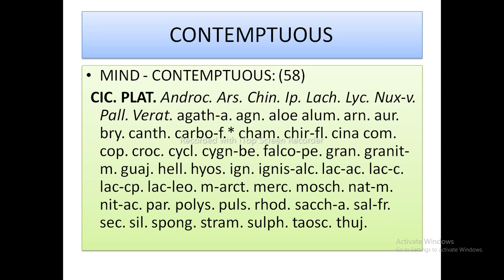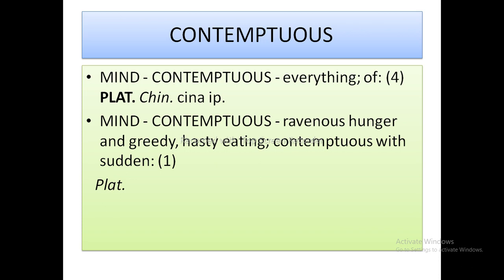The sub-rubrics include mind: contemptuous of everything. One of the remedies here is Platina, because of its superiority complex. You should understand the why of that particular remedy — why it lands in these particular rubrics. If you understand the why, you can select the correct rubric and finalize the remedy from the group in practice.